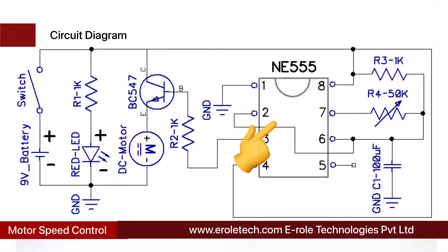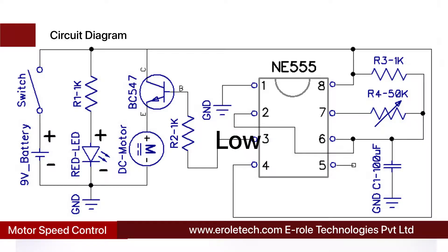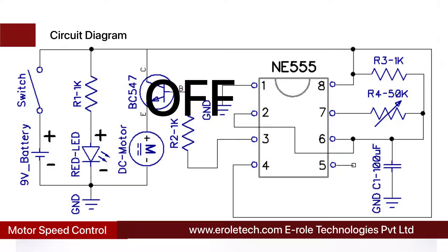The 555 is a timer IC. It can work in three different modes: monostable, astable, and bistable mode. In this project, we are using it in astable mode, so it will continuously give high and low signals at its output pin. We have connected an NPN transistor BC547 at its output pin, which will switch on and off with a preset frequency.